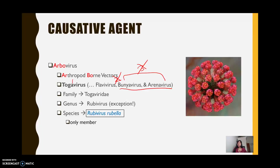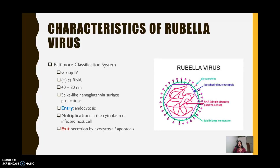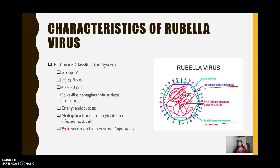The rubivirus is the exception: it is the only togavirus that is actually not an arthropod-borne vector. In fact, transmission of this virus is usually via respiratory droplets, but we will go into more detail later. This right here is a structure of the rubella virus. It is part of group four of the Baltimore classification system. All this genomic material is positive-sense single-stranded RNA, surrounded by an isometric icosahedral nucleocapsid. There is a nuclear envelope made up of a lipid bilayer membrane from the host cell's membrane, with spike-like hemagglutinin glycoprotein projections from the surface.